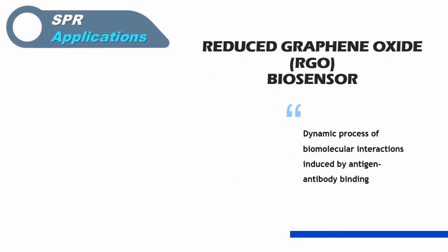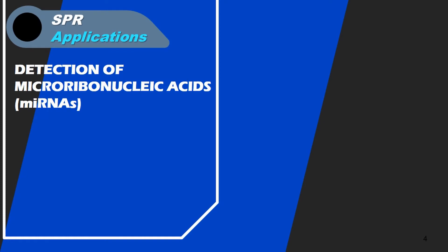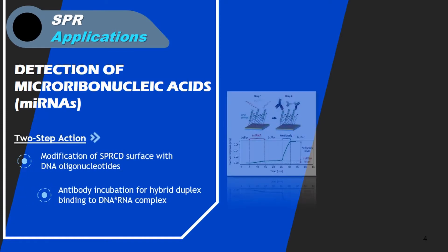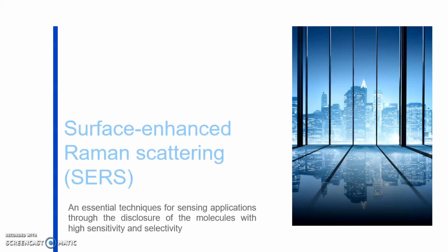RGO biosensor is a dynamic process of biomolecular interactions induced by antigen-antibody binding. Detection of microribonucleic acids involves a two-step action: modification of SPRCD surface with DNA oligonucleotides, and antibody incubation for hybrid duplex binding to DNA-RNA complex.